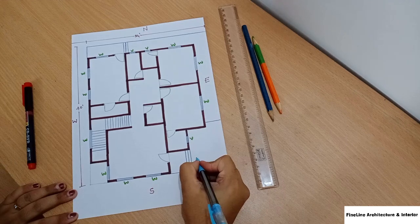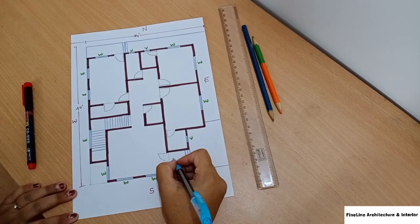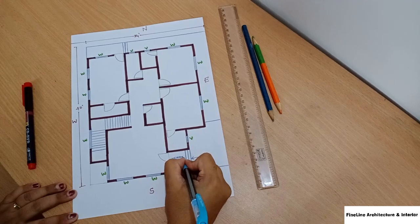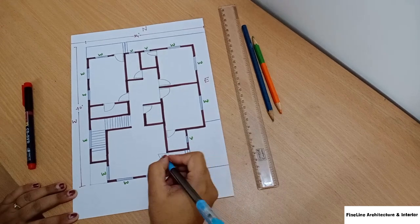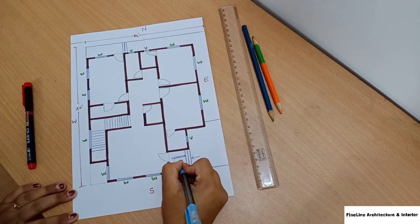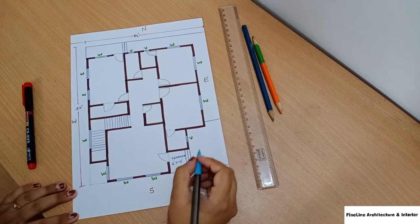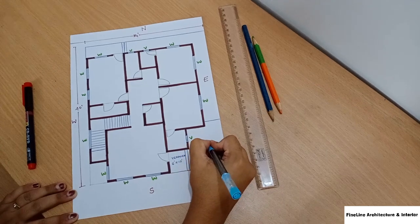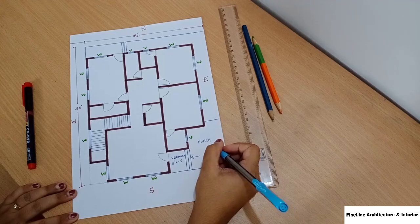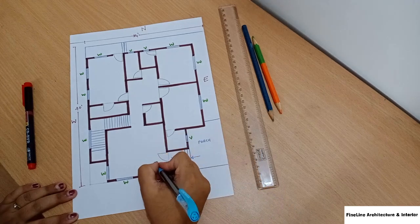Here, the east side is our entrance. This is a veranda, 6 feet by 10 feet. We have a porch in the entrance that will fit your car. This is the main entrance.